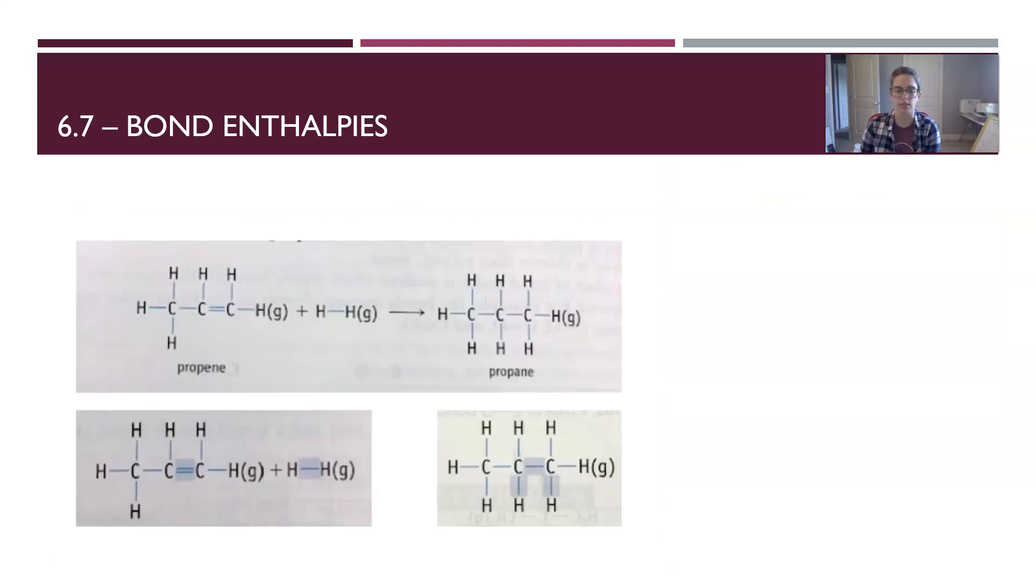Our first example is going to look at propene reacting with hydrogen gas to form propane. There are two ways that you can think about this question. You can think about breaking every single bond in your reactants and then reforming every single bond in your products, or you can look at just the bonds that are different, which is highlighted in the images on the bottom.